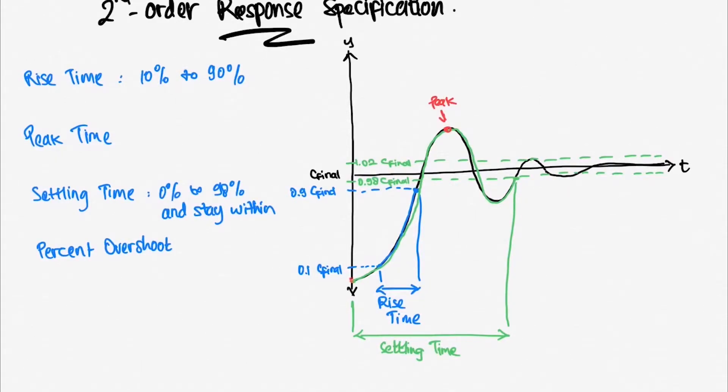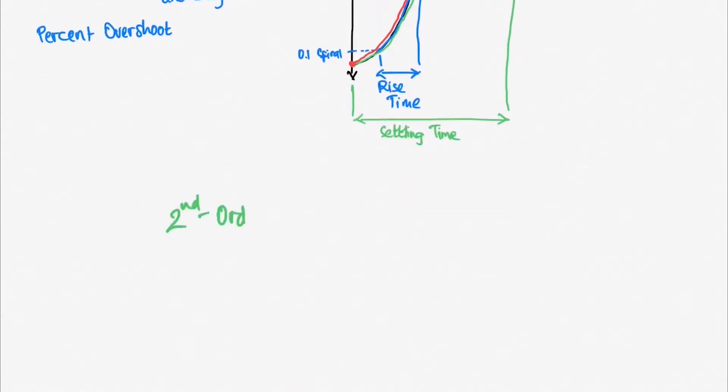The peak time is the time required to reach the maximum of the first overshoot. Percent overshoot is the amount of waveform overshoots, the steady-state value at its peak relative to the steady-state value.